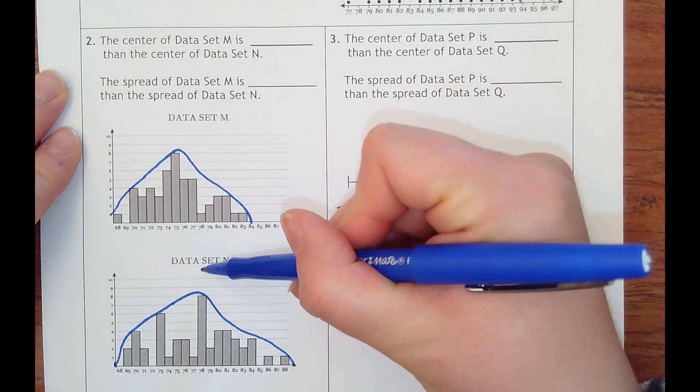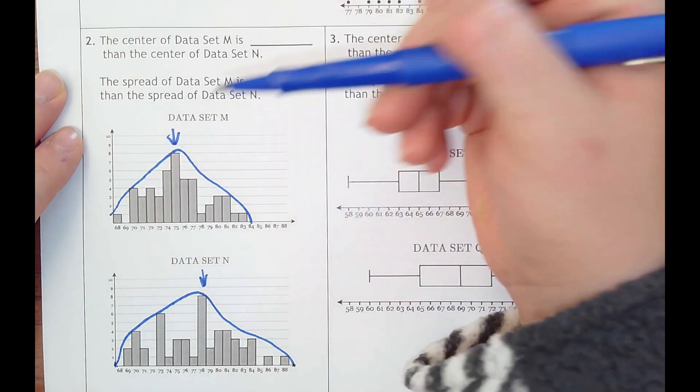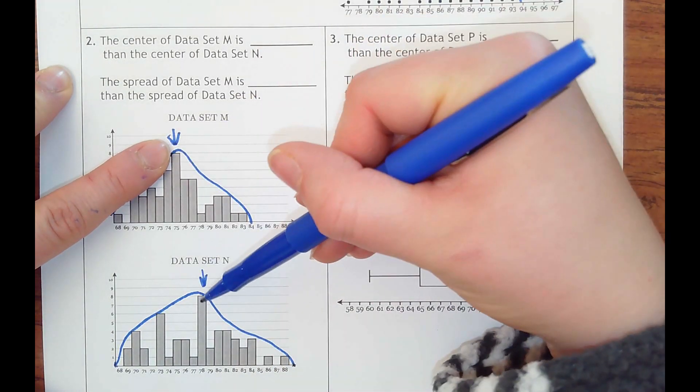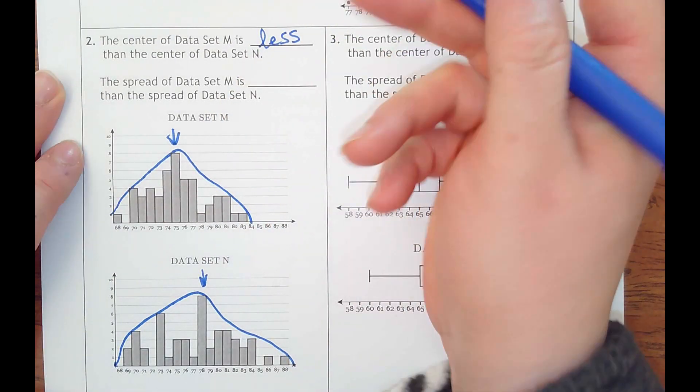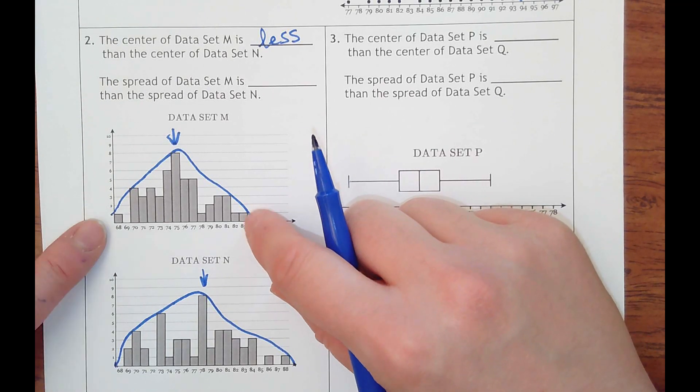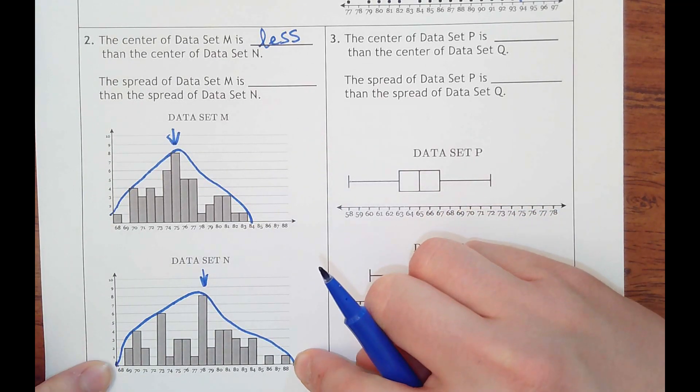And so it looks like this middle, this middle is less than this middle. And then the spread, you can see where this also is again less spread than how far this is.